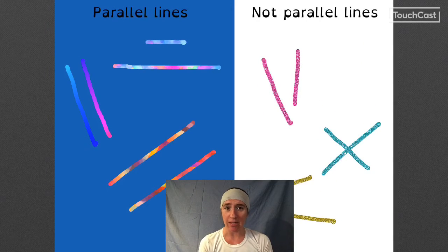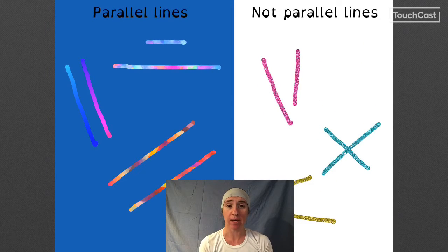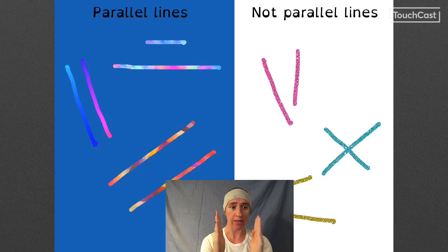Let's build on that concept of lines to talk about parallel lines. Now the lines on this side are parallel, the lines on this side are not parallel. What's the difference? What makes these ones parallel and these ones not parallel? Well the difference between parallel lines and not parallel lines is that two parallel lines are always the same distance apart from each other.